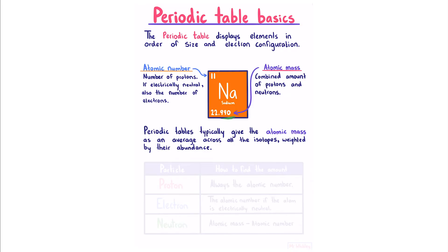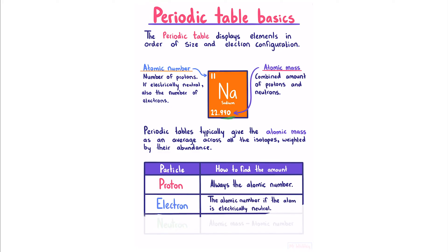And now to make things simple, here's a table of how to find the amount of any given particle. The proton is always the atomic number. The electron is the atomic number if the atom is electrically neutral. The neutron is the atomic mass minus the atomic number.